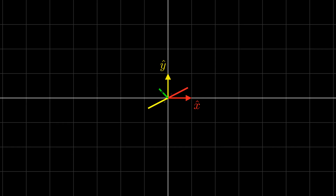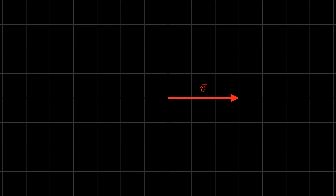What about these vectors? We saw earlier that these vectors are linearly dependent, so they are not a basis for the plane. Now what about a single vector? While a single vector is linearly independent, it does not span the plane, so it is not a basis for the plane. However, it does span this line, so while it is not a basis for the plane, it is a basis for this line.